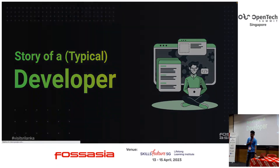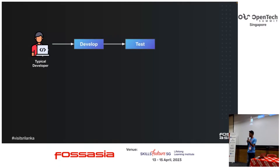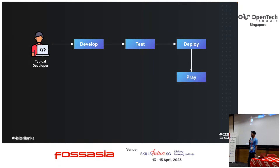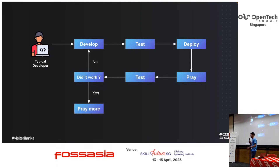Let me tell you a story of a typical developer. As a typical developer, we used to develop applications, and then we do some manual testing locally on our machines. And then we deploy. Then we used to pray to make the deployment successful. And we would again do some testing on the deployed environment. And if it didn't work, we had to go back to the develop stage. If it worked, we had to pray more to keep the application running successfully. This is the saddest lifecycle of a typical developer — where CI/CD never existed.